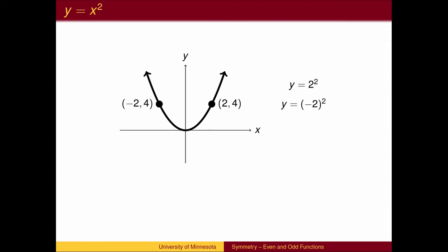In certain situations, the symmetry of a graph can simplify calculations. For example, when you square negative 2, you can ignore the negative sign. Any number squared will yield a positive answer, in this case 4. In general, it does not matter if you replace x with negative x — the answer will stay the same. Both are equal to x squared.